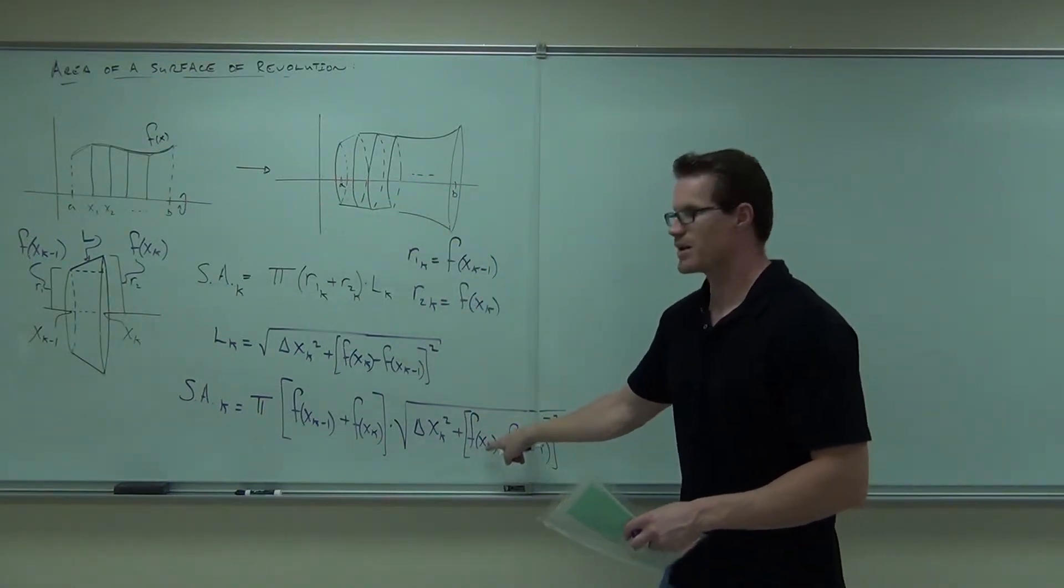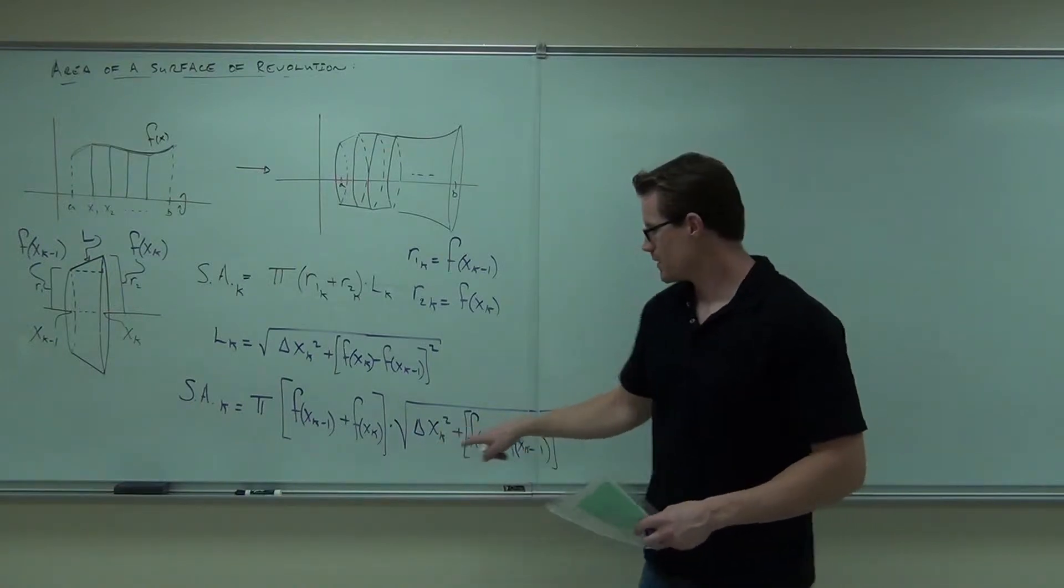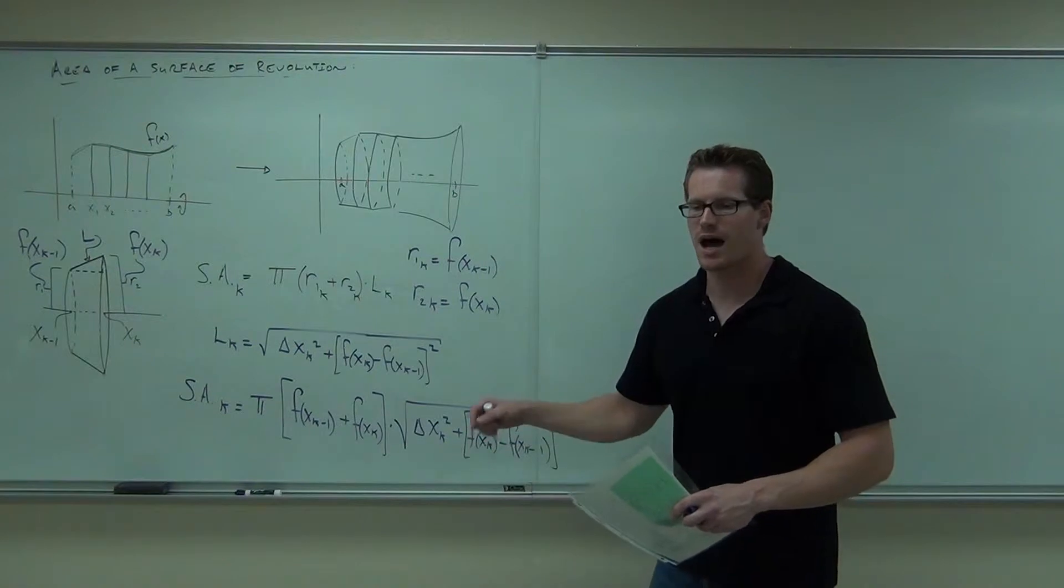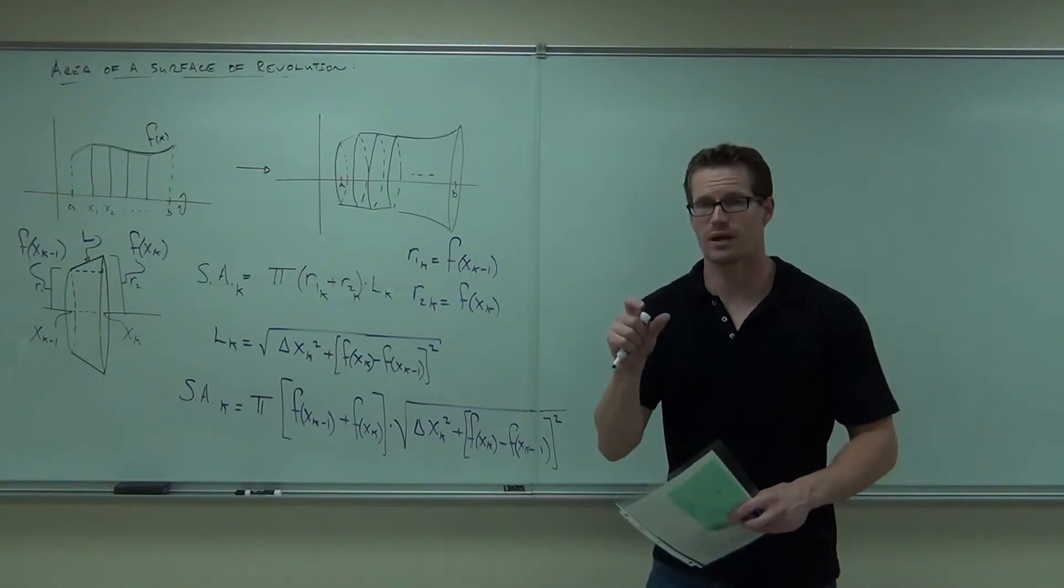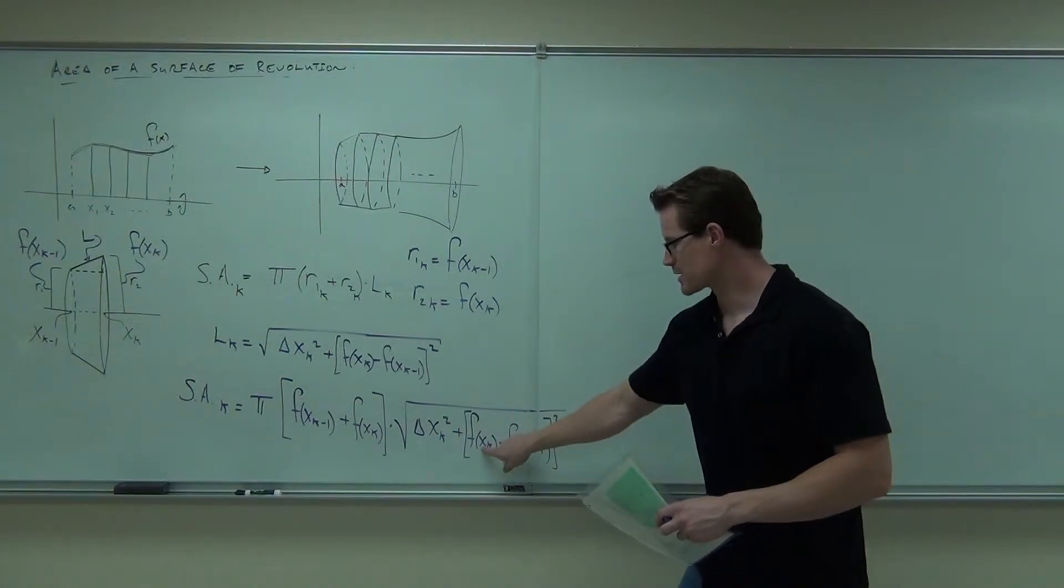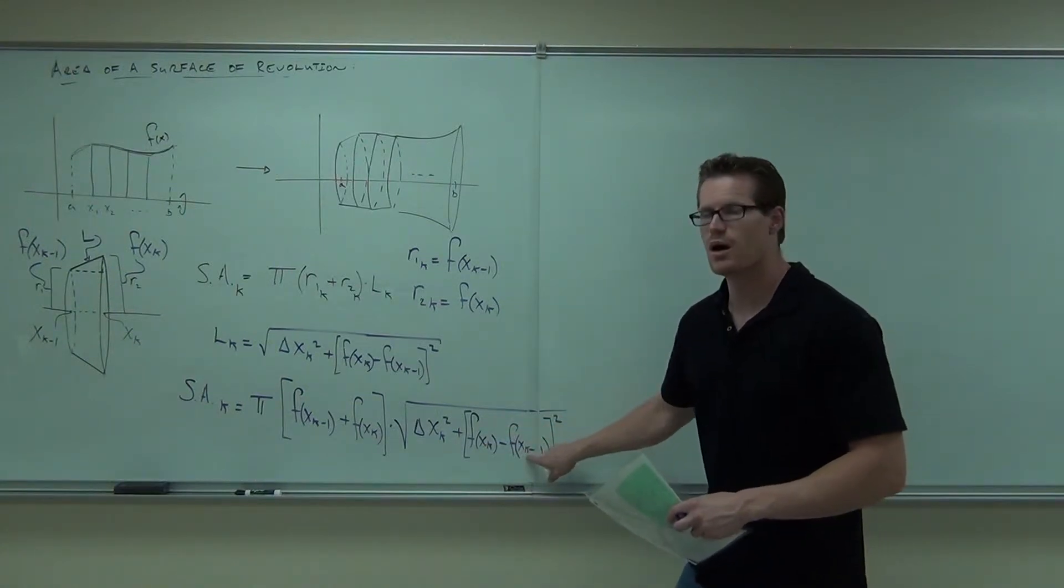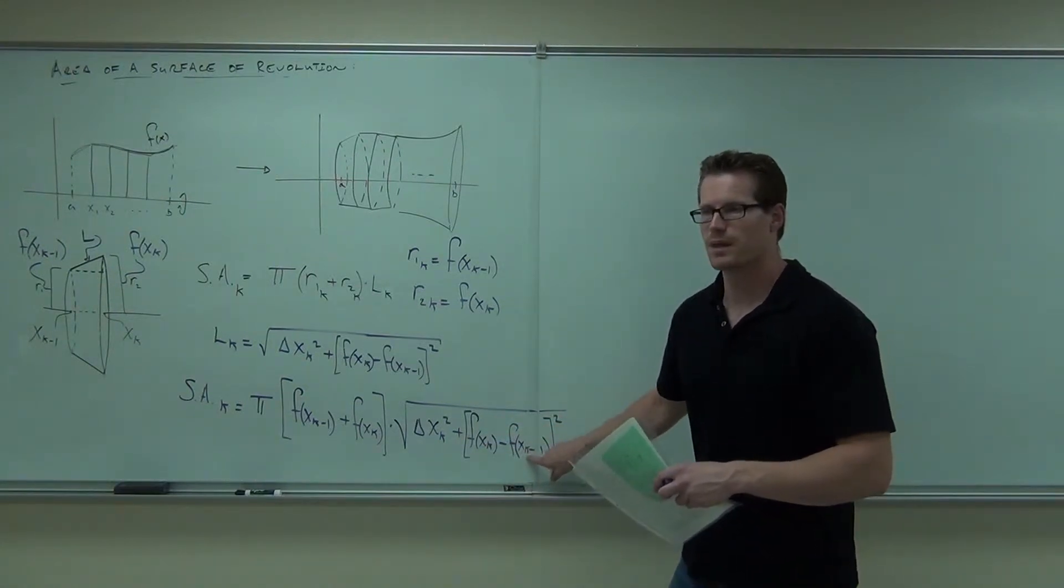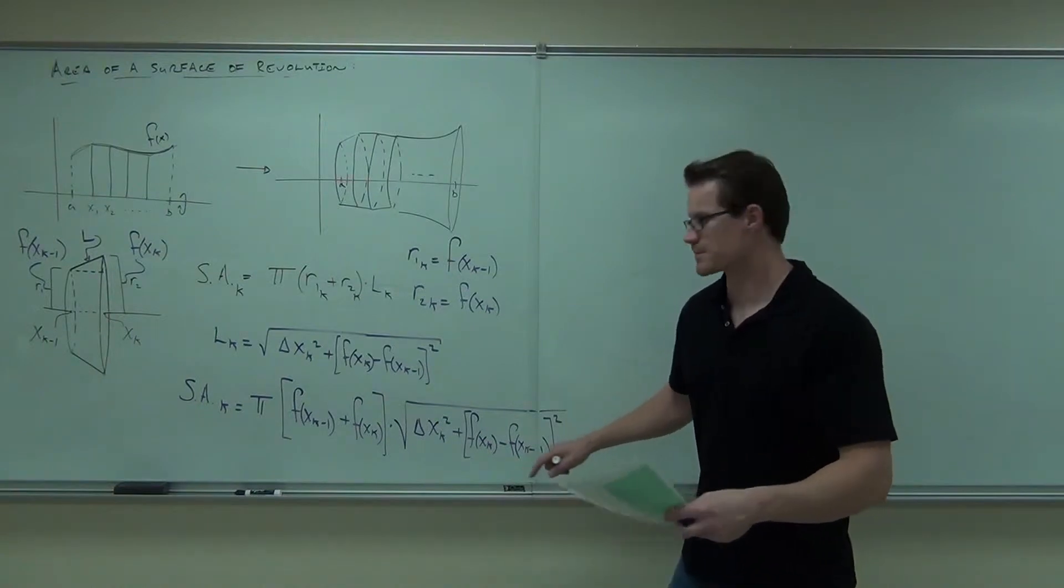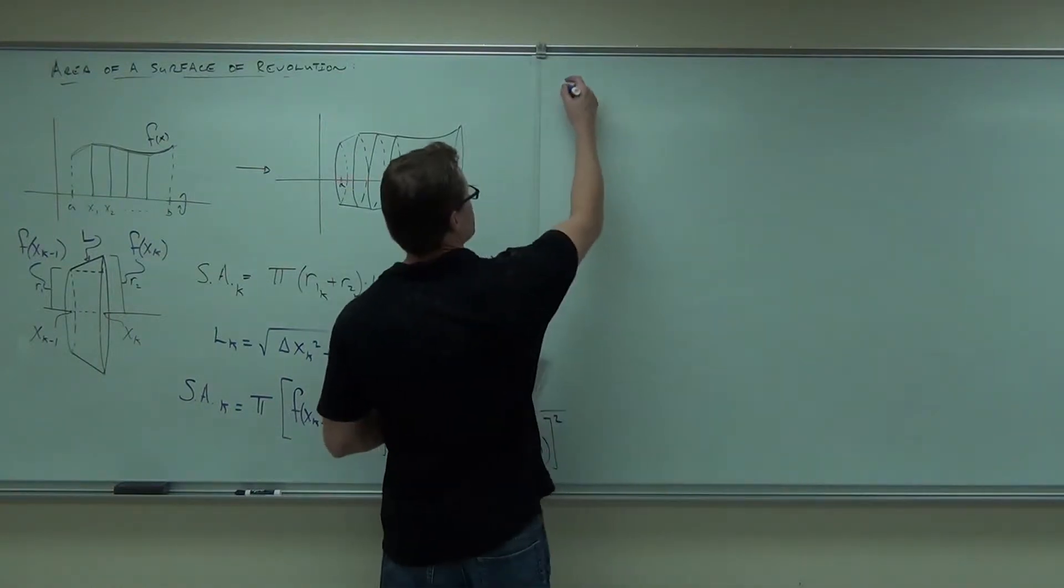Because what this is, by the mean value theorem says, if I manipulate this and have the slope between two points, I can find a certain point xk dot, which is between x of k and x of k minus one, for which the slope of the function is equal to the slope between the two points. In other words, the derivative at xk dot equals the slope between two points.